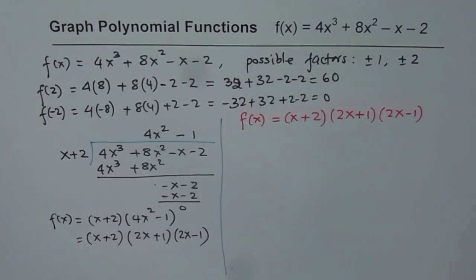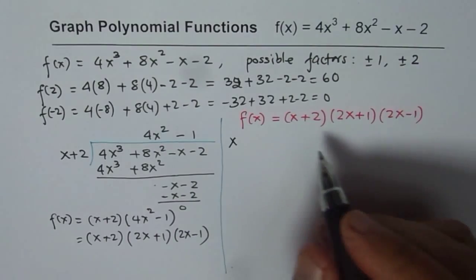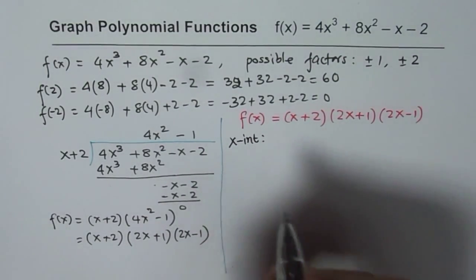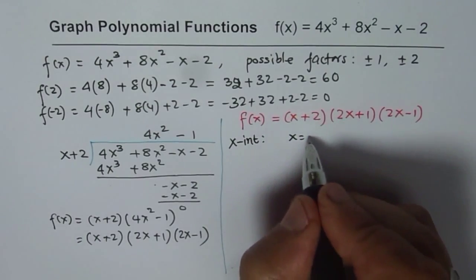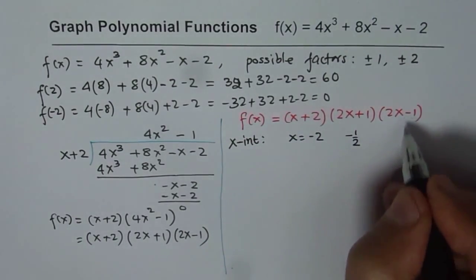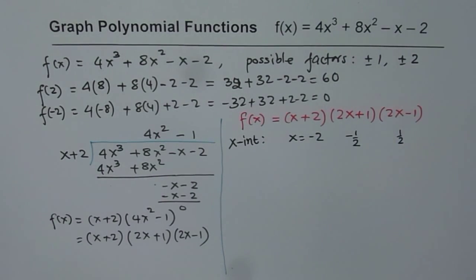So we have our function now, which is f of x equals x plus 2 times 2x plus 1 times 2x minus 1. When you get this in factored form, we can easily write down all the x-intercepts along with multiplicity of zeros. So we have x-intercepts at x equals minus 2, this is minus half, and this is at half. So these are your three zeros, and they are all linear.